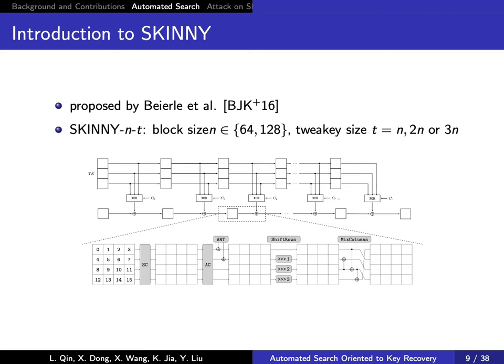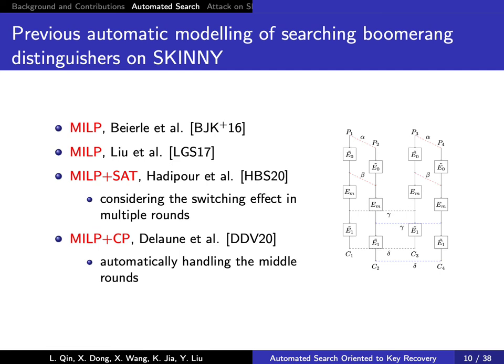Let N denote the block size, T denote the tweakey size, and C denote the cell size. The family of Skinny has six main versions. In each round of Skinny, the state is updated with five operations: SubCells, AddConstants, AddRoundTweakey, ShiftRows, and MixColumns. The designers of Skinny first gave the MILP model to search truncated differentials for Skinny. Later, Liu et al. tweaked the model to search boomerang distinguishers.